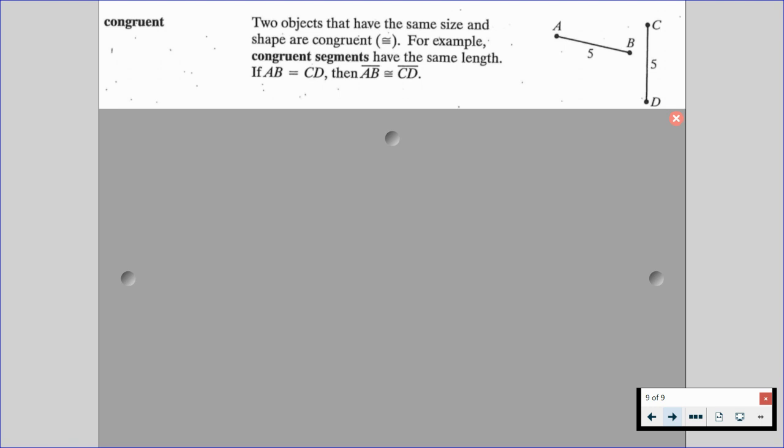When we have an equal sign, that means we are talking about the value, the length, the measure. But when we talk about congruency, we have to be talking about the actual shape. So we have the length of AB is equal to the length of CD. But we have segment AB is congruent to segment CD. That's very, very important to understand the differences there.